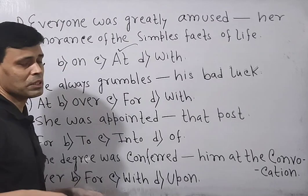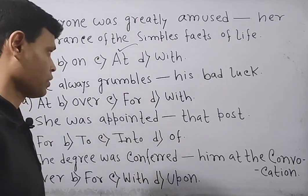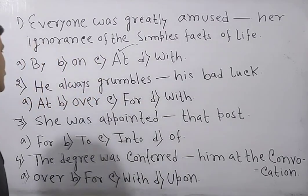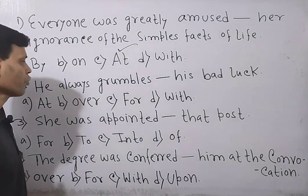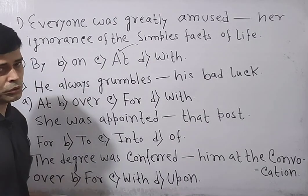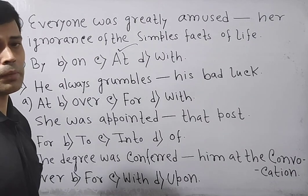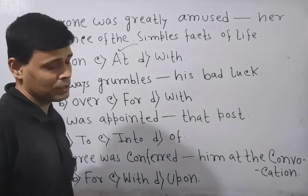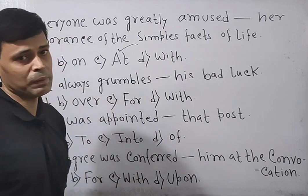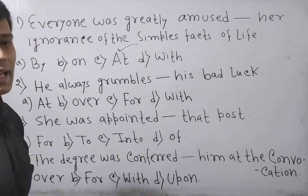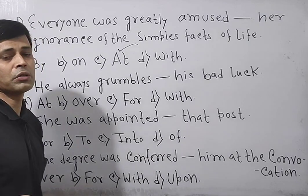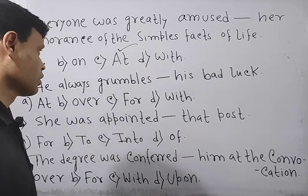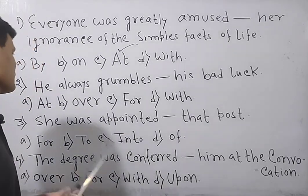Now go next. He always grumbles - grumbles means shows dissatisfaction - his bad luck. Options are: at, over, for, with. So after the word 'grumble' we need to use the preposition 'at'. But in the second option you can select the preposition 'over'. But when the preposition 'at' is present there, there is no need to select the preposition 'over'. So here the answer is 'at'.